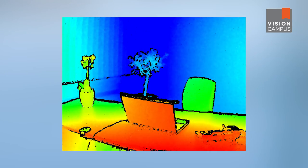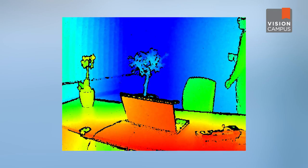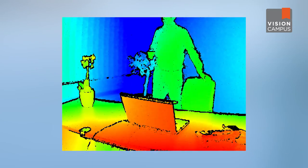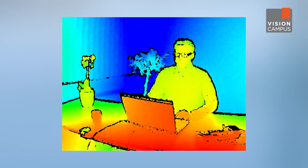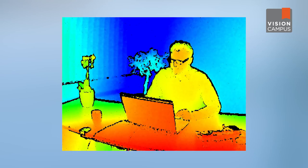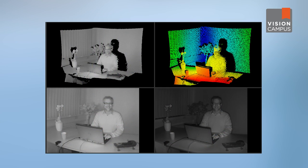The result is a range map, where each pixel encodes the distance to the corresponding point in the scene. This example shows the depth information as a pseudocolor image — blue is far away and red is close. As the TOF camera captures a normal 2D intensity image in parallel with the depth information, we can merge the information sets and create a textured 3D graphic.